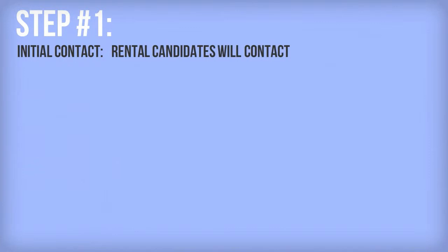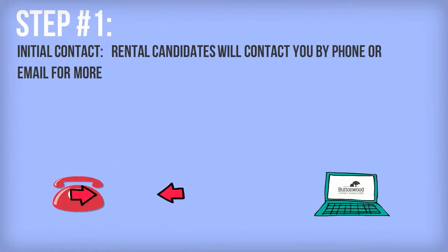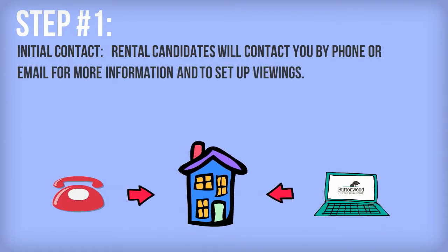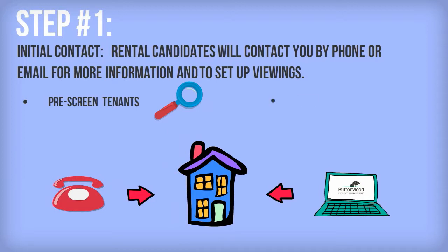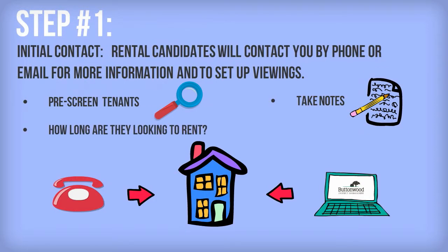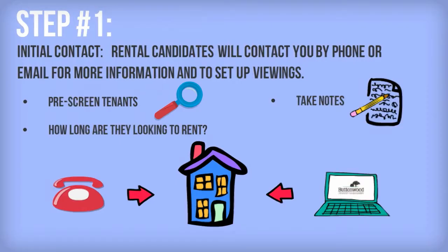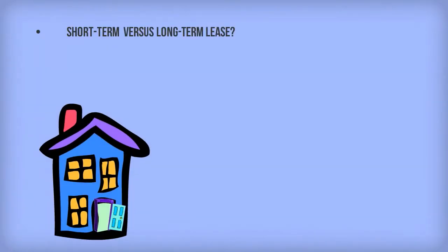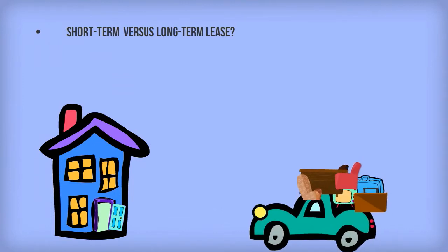Step 1: Initial Contact. Rental candidates will contact you by phone or email for more information and to set up viewings. This initial contact is a great opportunity to pre-screen would-be tenants. If you're chatting by phone, take notes throughout the process. Ask things like how long are they looking to rent? If you're interested in a short-term lease but they're looking for something longer-term, identifying this mismatch now saves you both a wasted showing.